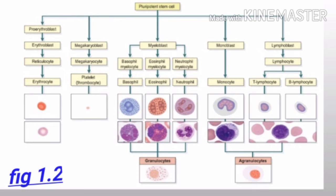Monoblast is divided into monocyte. Lymphoblast is divided into lymphocyte, which is further divided into T lymphocyte and B lymphocyte. Monocytes and lymphocytes are the agranulocytes, while the myeloblast derivatives are the granulocytes.